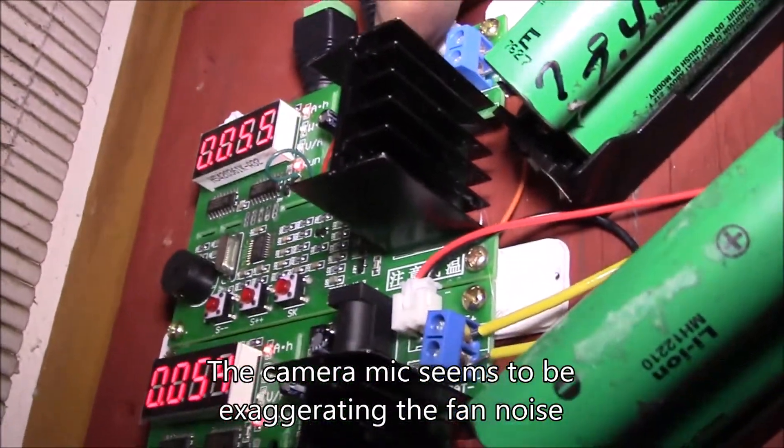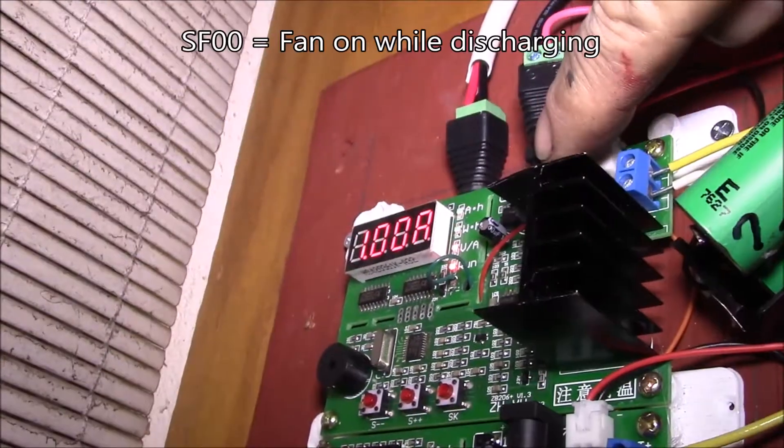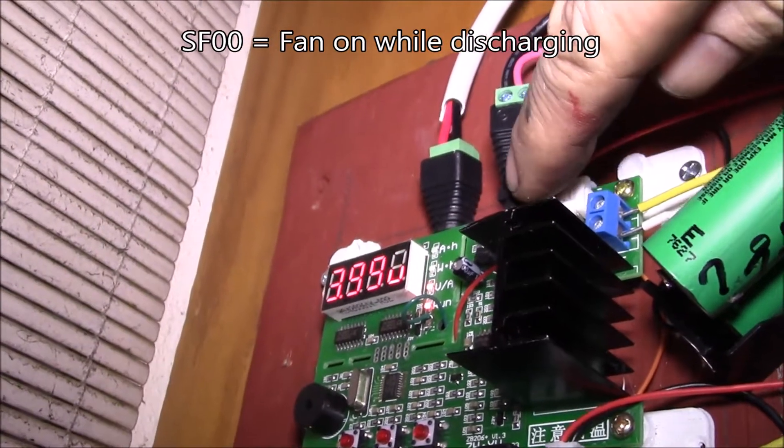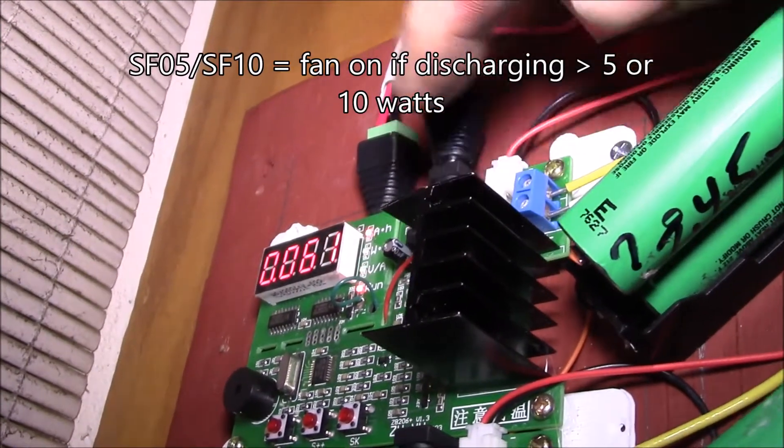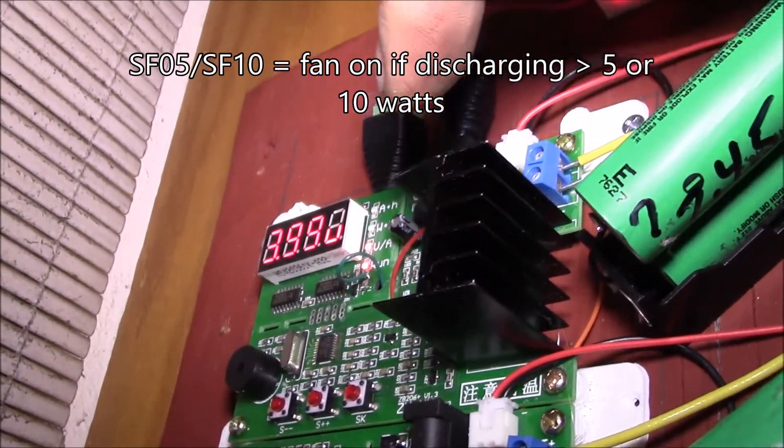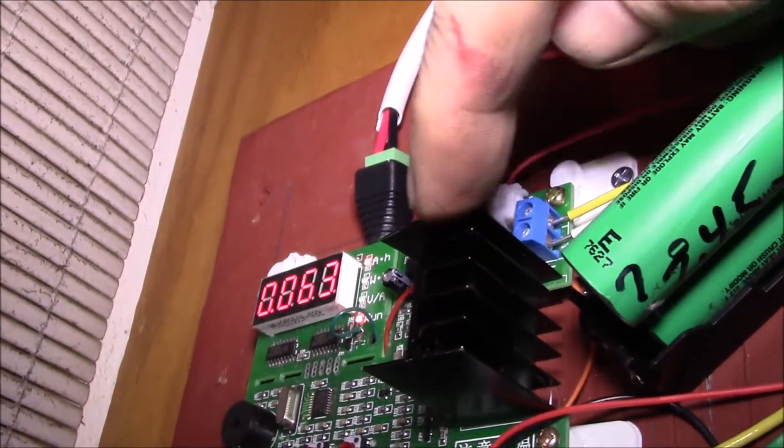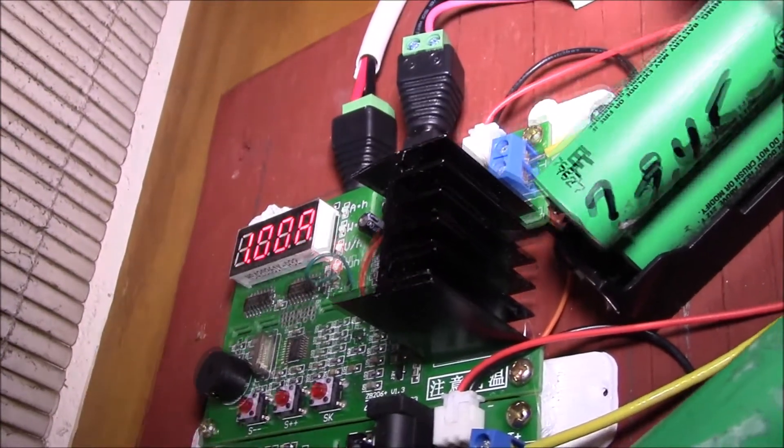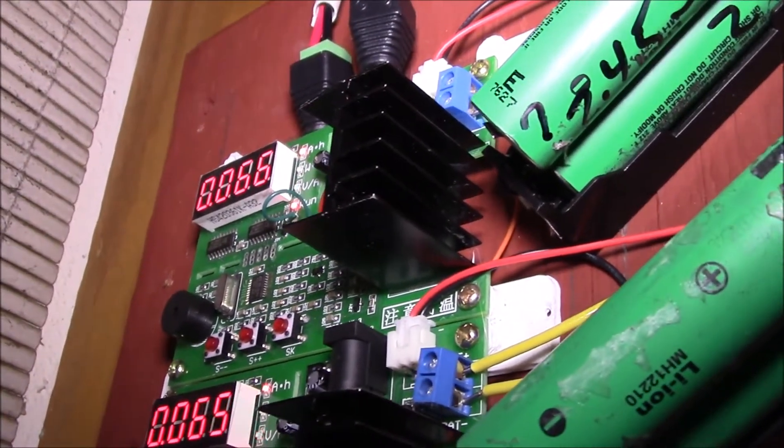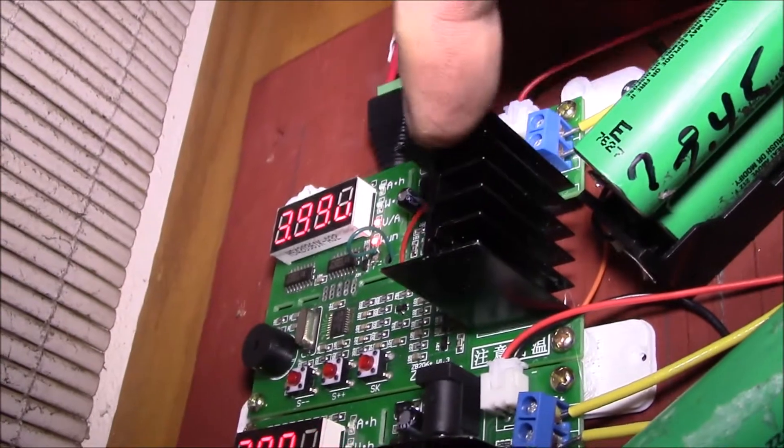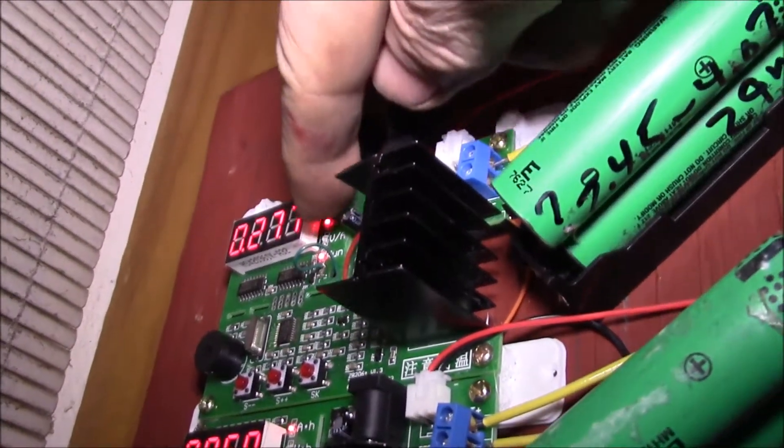A couple things on these - you can set up this fan to automatically turn on. There's three modes: one is called SF0 which says turn the fan on any time this is discharging. Then there's an SF5 which says turn the fan on above 5 watts, and then I think there's an SF10 that says turn the fan on above 10 watts. I have it set on the SF0 mode that says just turn the fan on any time this upper unit is being used in discharge mode.